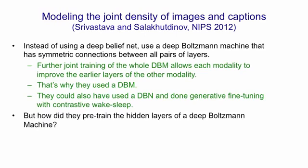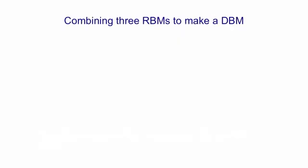This leaves the question of how they pre-trained the hidden layers of a deep Boltzmann machine, because what we've seen so far in the course is that if you train a stack of restricted Boltzmann machines and combine them together into a single composite model, what you get is a deep belief net, not a deep Boltzmann machine. So I'm now going to explain how, despite what I said earlier in the course, you can actually pre-train a stack of restricted Boltzmann machines in such a way that you can then combine them to make a deep Boltzmann machine.